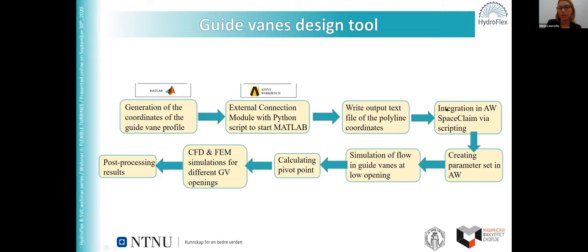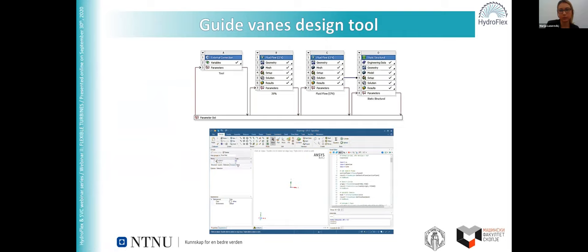This is connected with SpaceClaim, which generates the geometry of the guide vane system and the other stationary parts. The guide vane is first positioned at low guide vane opening in order to suggest a new pivot point where the hydraulic torque at this low guide vane opening would be zero. Then, the other numerical simulations are done with the new pivot point for different guide vane openings around that point. The post-processing results are related to the optimization criteria, which will be explained later. This is the parameter set established in ANSYS Workbench.